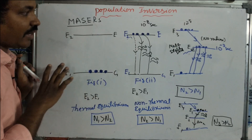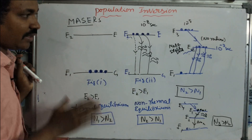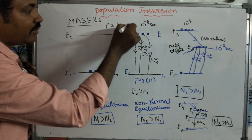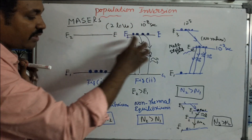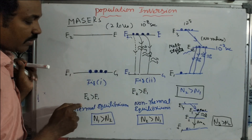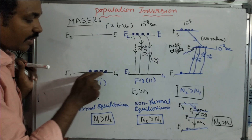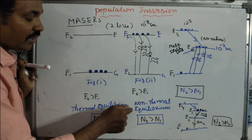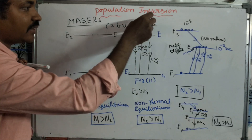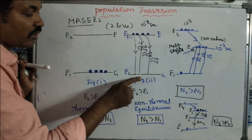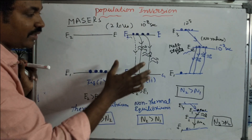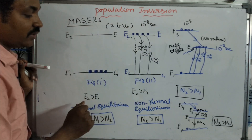This is the two-level population inversion diagram. In Figure 1 and Figure 2: at thermal equilibrium, all atoms are at the ground state. When non-thermal equilibrium is acquired through optical pumping, atoms jump to the excited state, stay for 10 to the power of minus 8 seconds, then come back. Before that, the population is more at N2 compared to N1 — this is two-level energy population inversion.